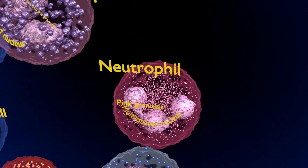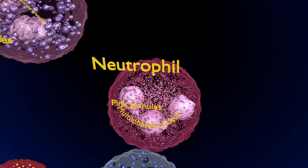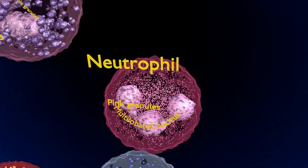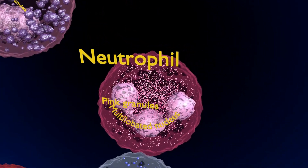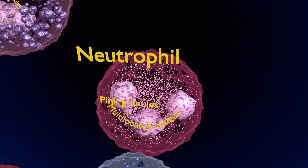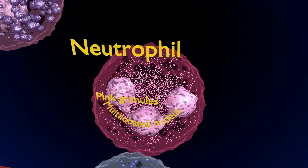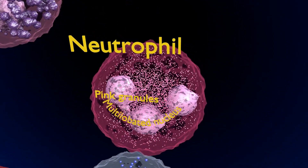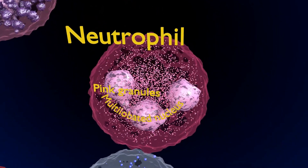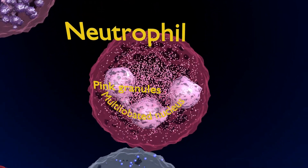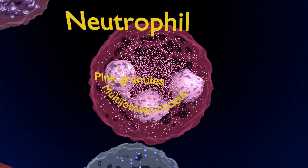The first leukocyte demonstrated is the neutrophil, which is the most abundant type of white blood cells, making up 55-70% of white blood cells. They are 12-15 micrometers in diameter. The neutrophil shown in this video has a nucleus with three lobes. A neutrophil has a multi-lobulated nucleus, generally containing three to five lobes.